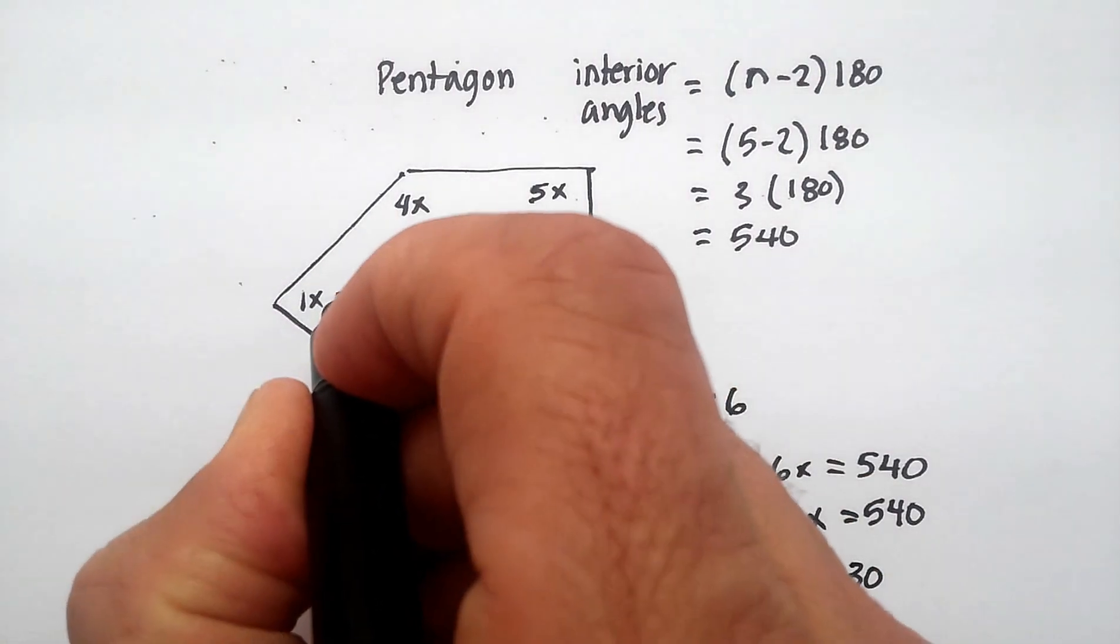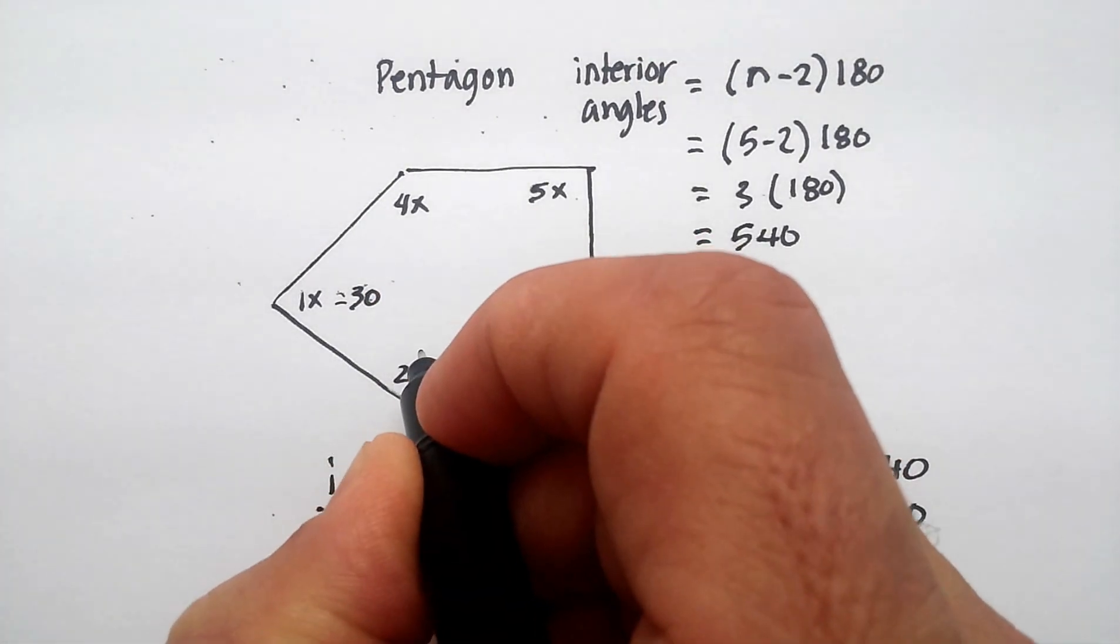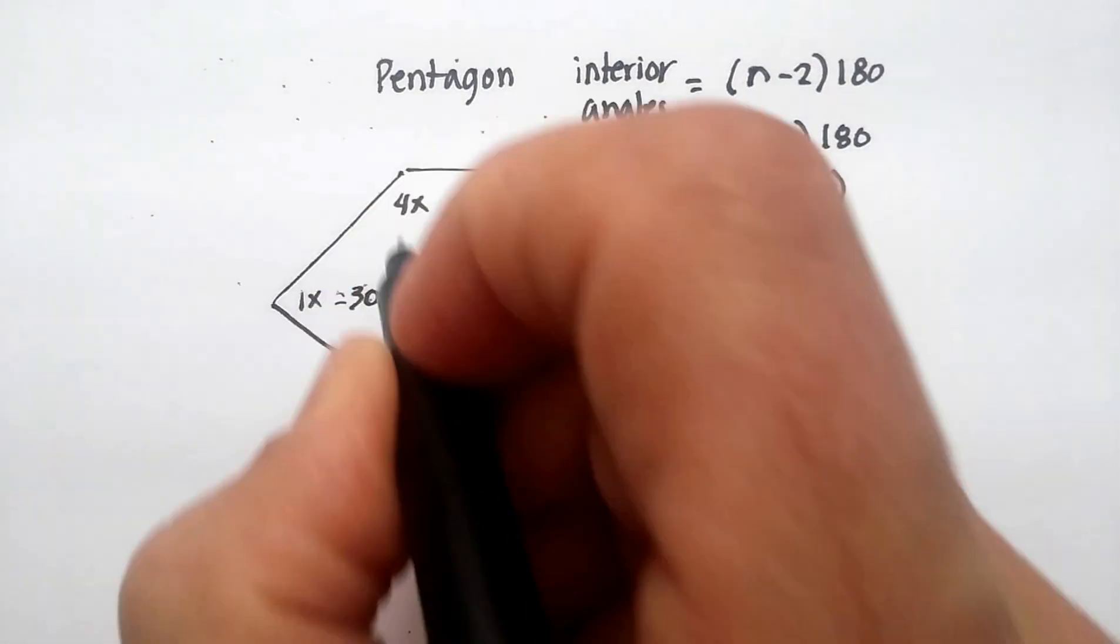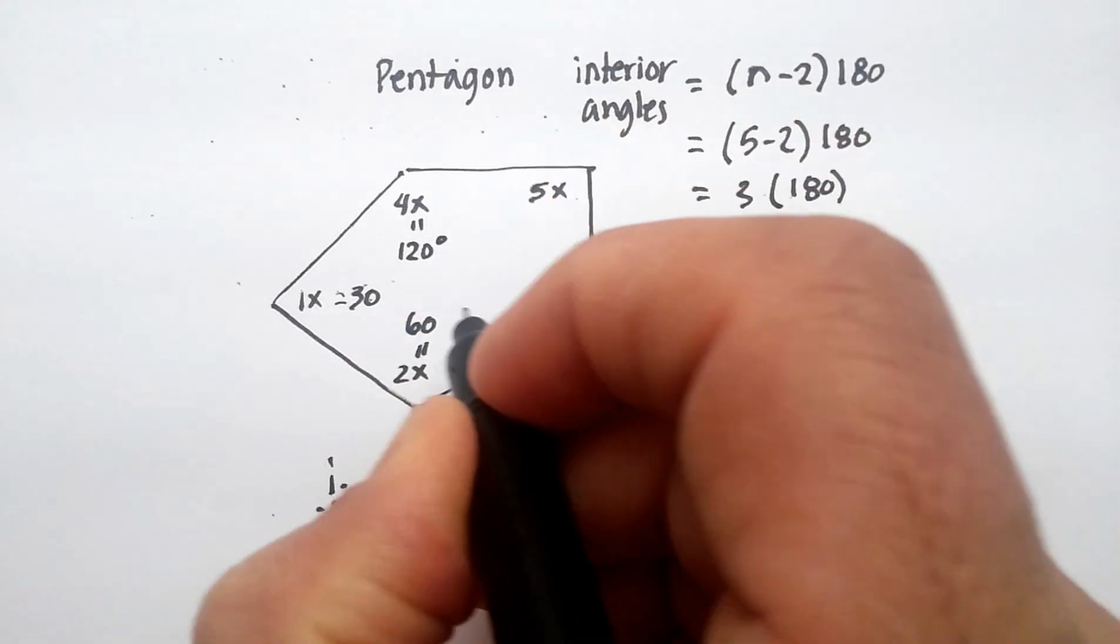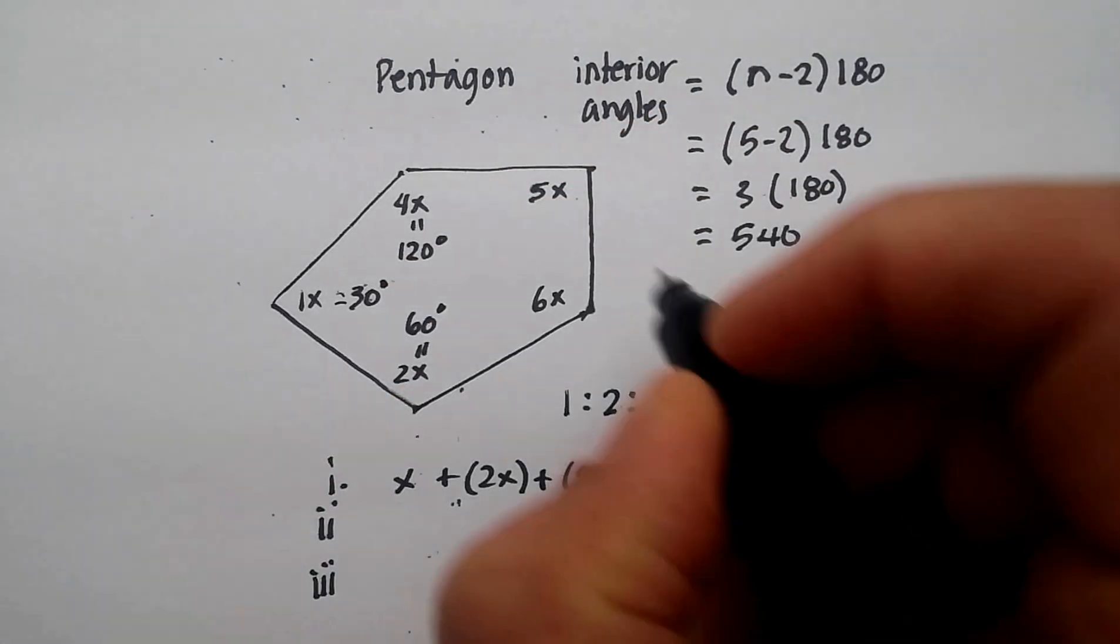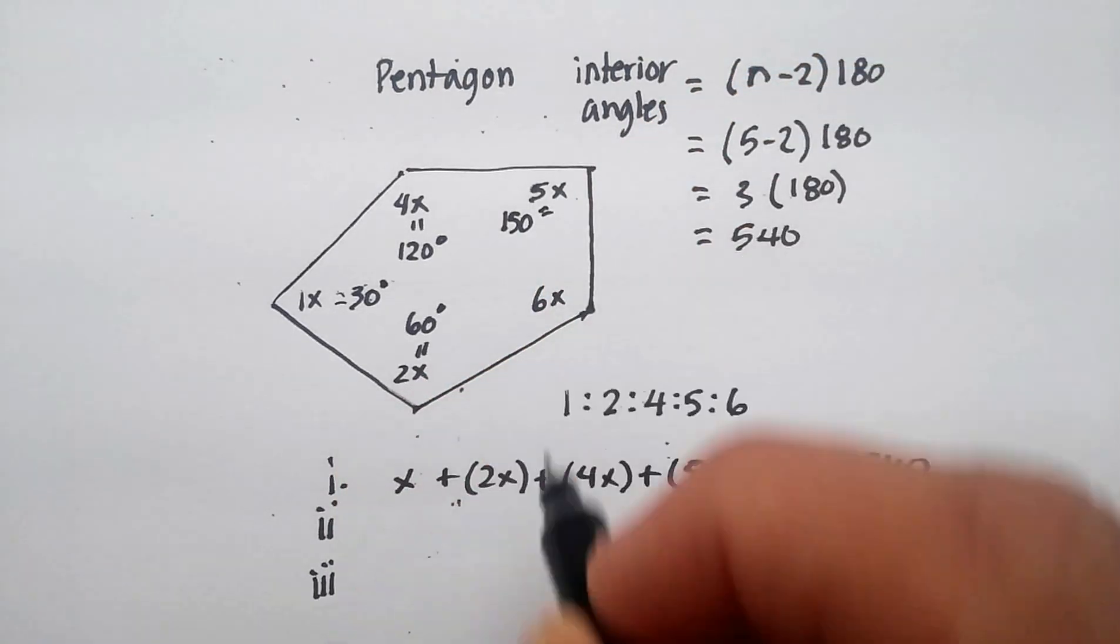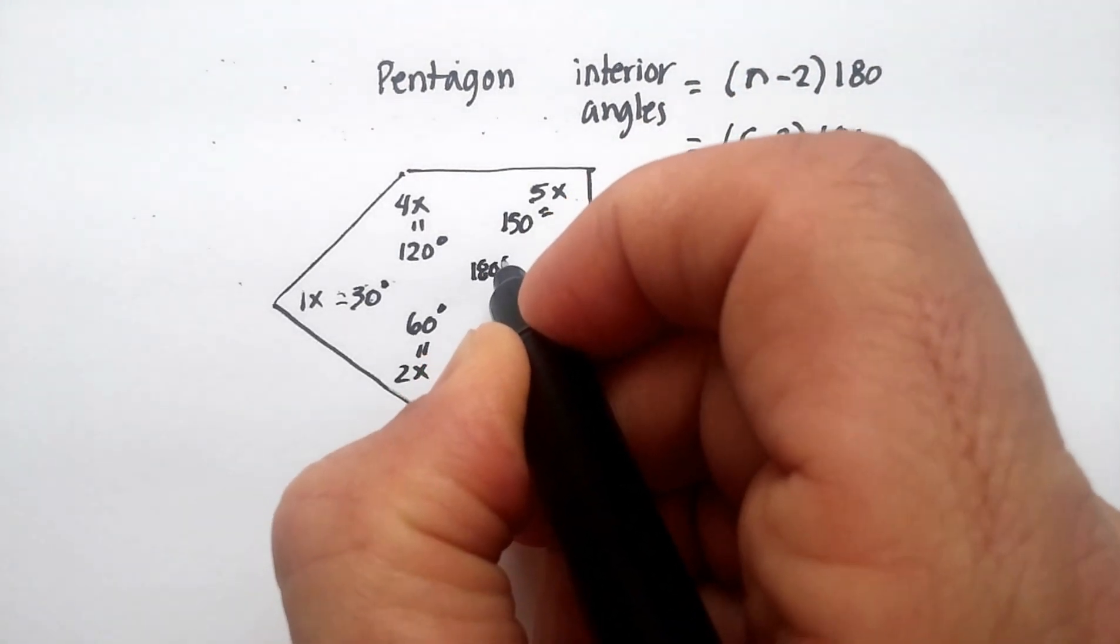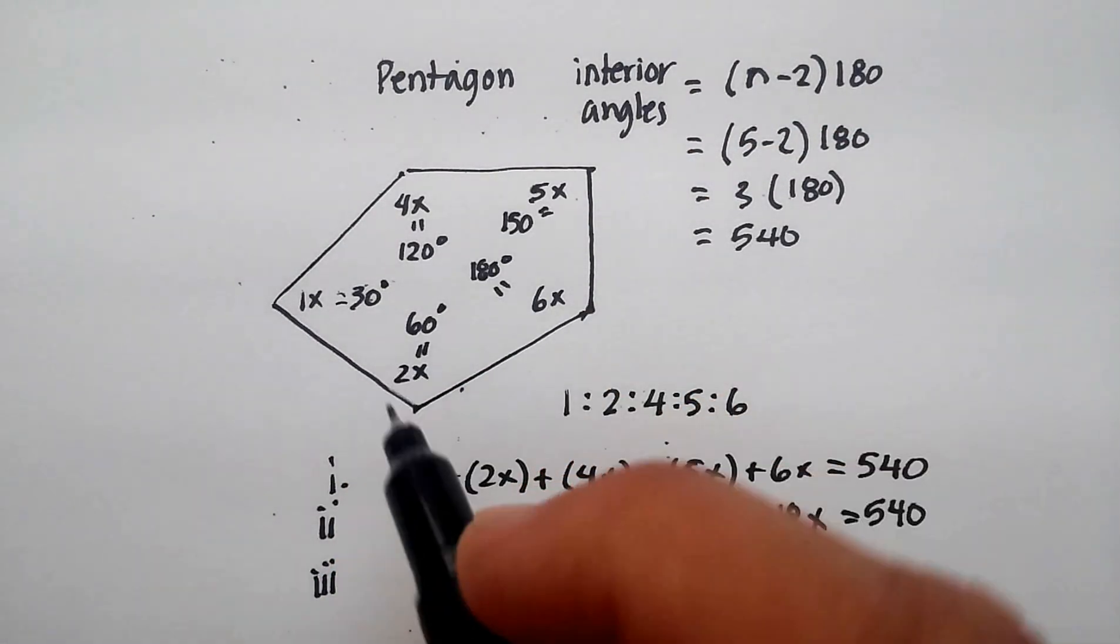And then just go back and plug in your answers. And this would become 30. This one would be 60. This would be 120. This would be 150. And this would be 180. And again, how would I prove that that's true? Add up these interior angles.